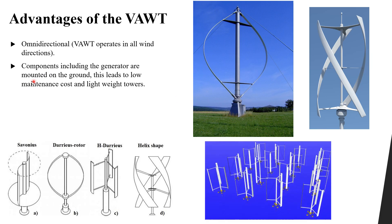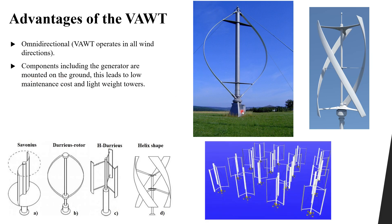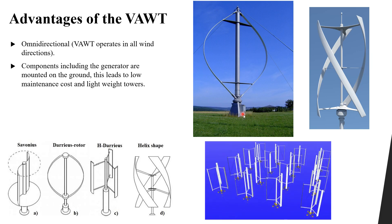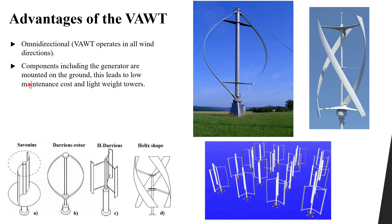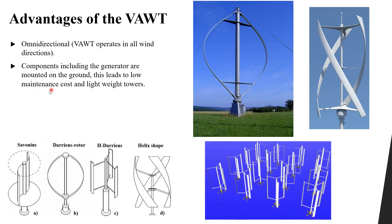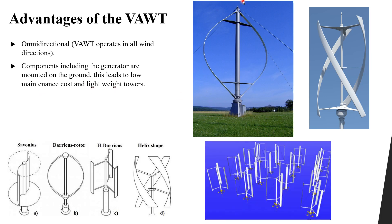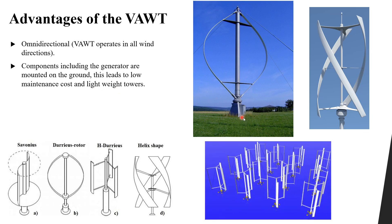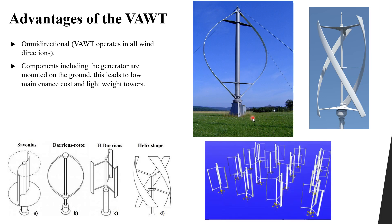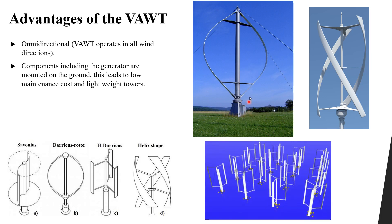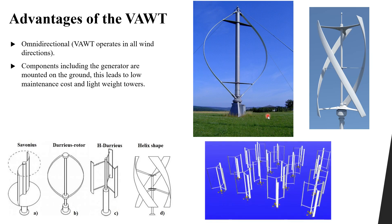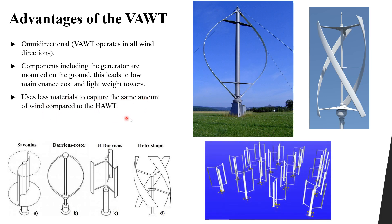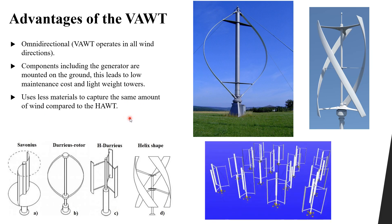Also, as you can see, the components of the vertical axis wind turbine — the gearbox and the generator — are mounted on the ground. The benefit of this is that we can easily access them for maintenance, leading to low maintenance cost. The tower is also lightweight because the generator is not placed at the top.